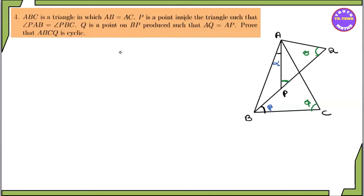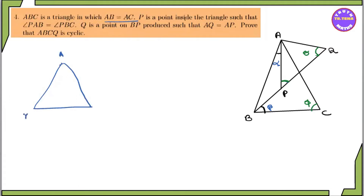Exercise 7.2, number 4. We can see ABC is a triangle in which AB is equal to AC. AB and AC are the same.